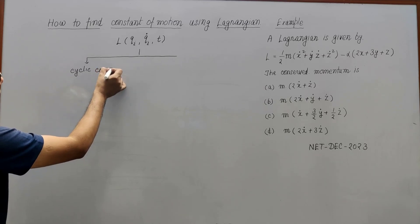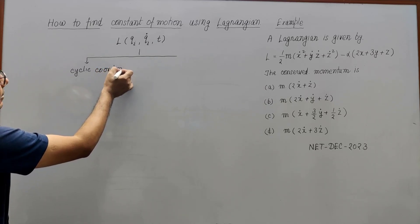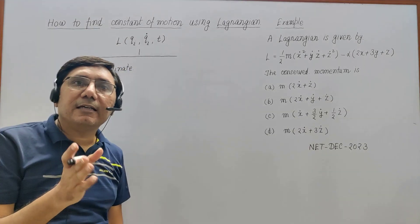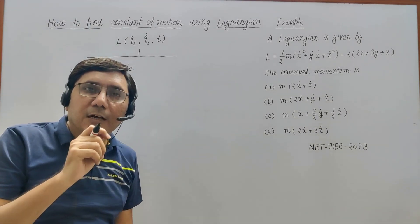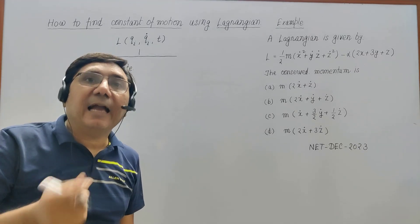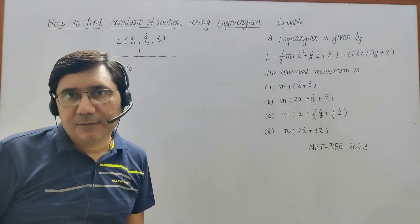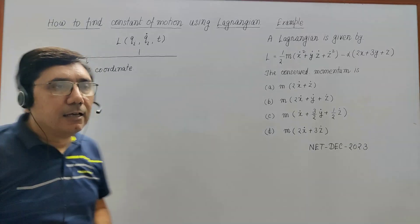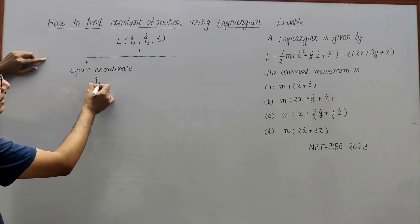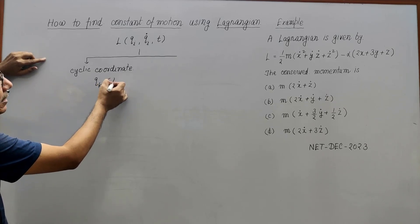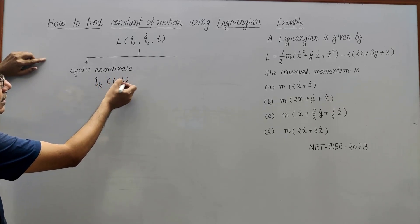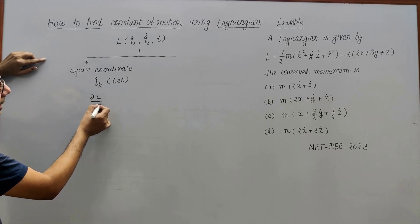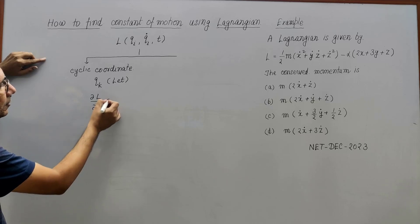Now the question is: what are cyclic coordinates? Cyclic coordinates are those coordinates which do not appear explicitly in the Lagrangian. So suppose Qₖ is the cyclic coordinate — if Qₖ is the cyclic coordinate, then ∂L/∂Qₖ will be zero.